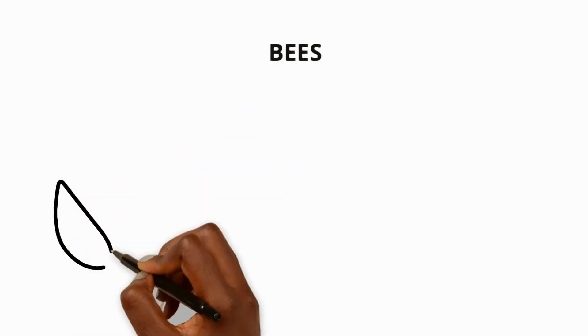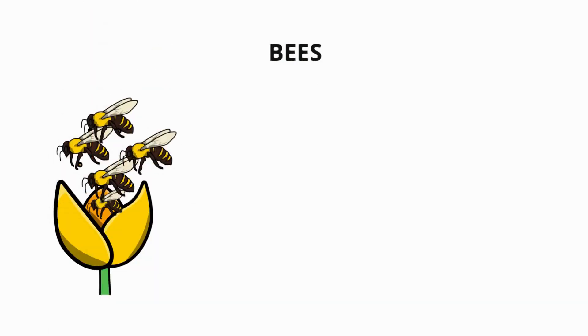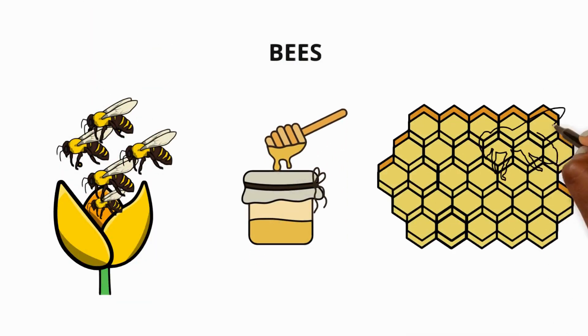Bees are a type of insect. They live in large groups and play important roles in pollinating plants. They spread seeds and produce honey and wax.